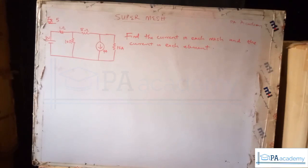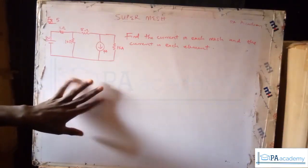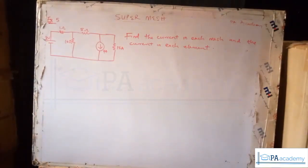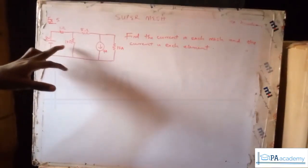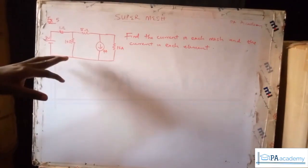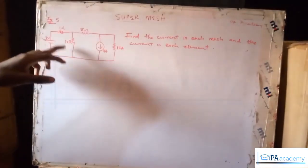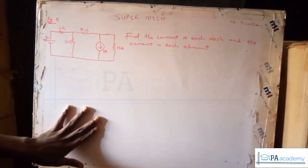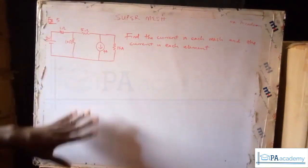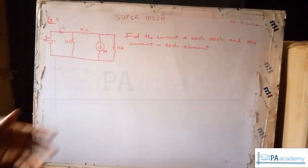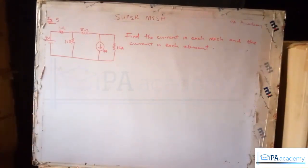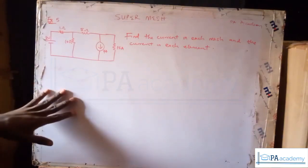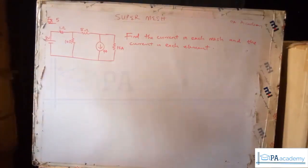Now let's look at Example 5. We have this circuit and we need to find the current in each mesh and the current in each element. We have three meshes, and we're going to look for the currents flowing through the resistors. If you've been following this series, this should be a bonus question — so pause the video, attempt it, note your answer, and then check the solution.